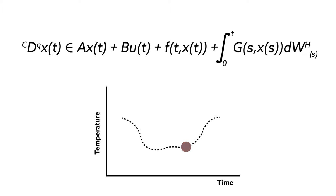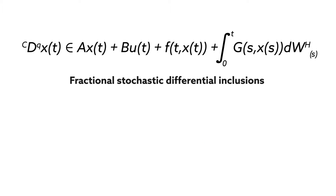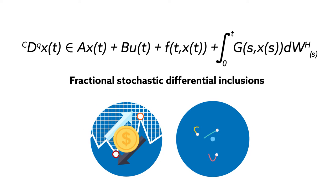To address this problem, a team of mathematicians asked whether such control could be achieved for equations called fractional stochastic differential inclusions. These equations describe some of the most unpredictable and noisy systems found in the real world, such as financial markets and quantum systems.